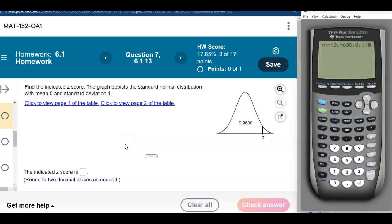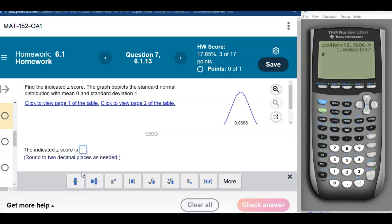If I didn't have an 84 that has that menu to ask what's the area, what's the mean, what's the standard deviation, that's the order it goes in: area to the left, the mean, the standard deviation. I hit enter, there's my number. It wants it to two places, so that's just going to be 1.86.